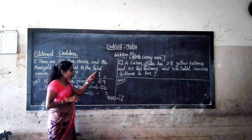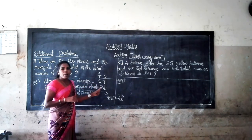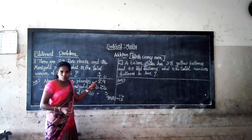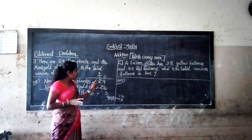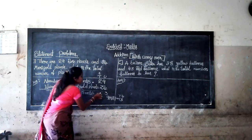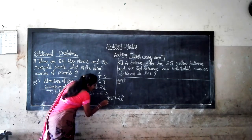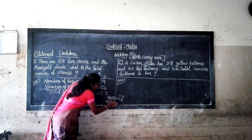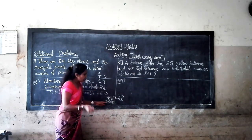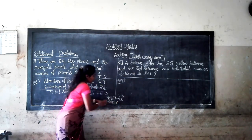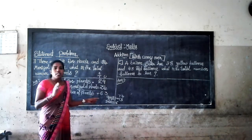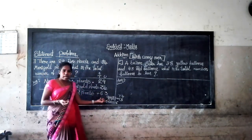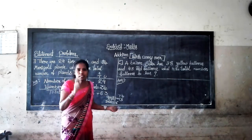Now we add 1 plus 2 plus 3. The sum: 1 plus 2 is equal to 3, then 3 plus 3 is equal to 6. 6 is a single-digit number. Here total number of plants is 63.